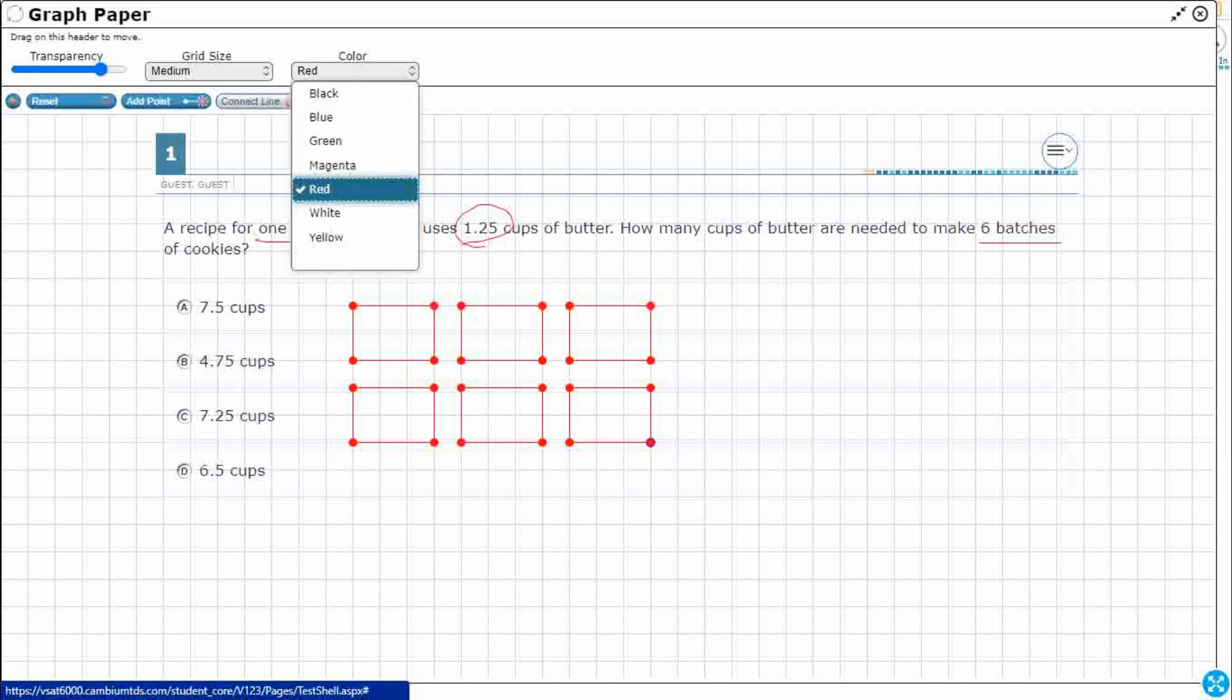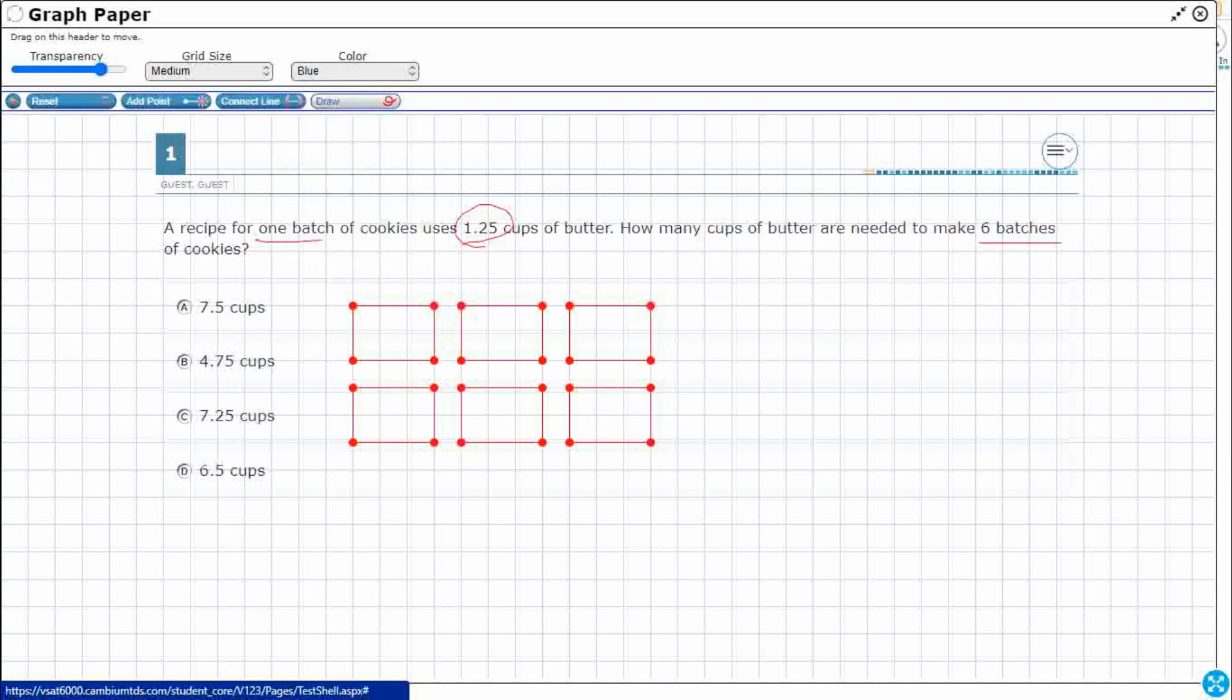Each of these cookies batches, let's go back to draw, is 1.25. Now when we're looking at this we're thinking oh okay so that's six times 1.25 and if you're thinking six times 1.25 you are correct. That is one way to do it.